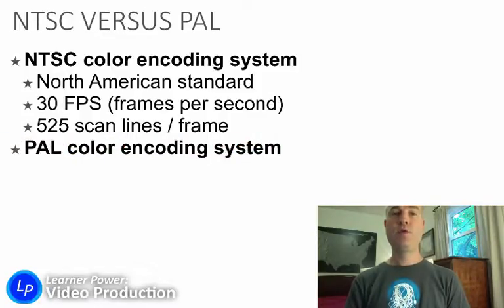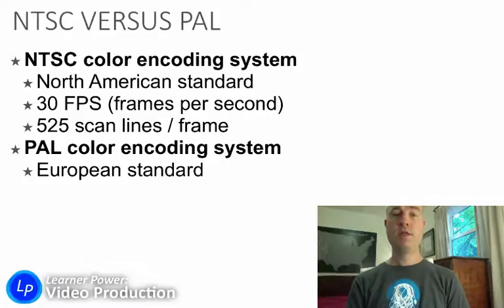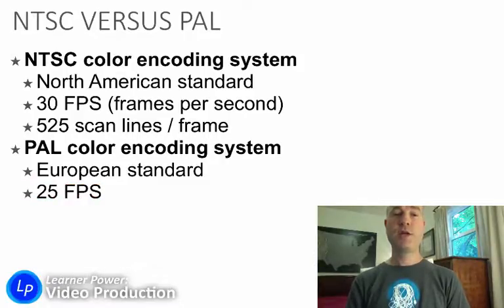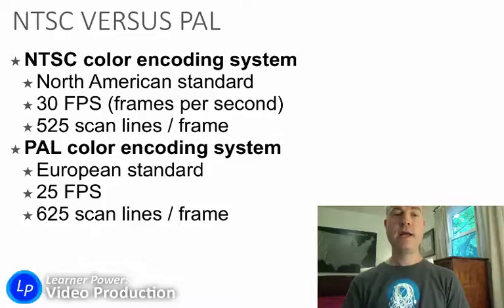Then we move over to PAL, which was used in Europe and some other parts of the world as well. The PAL color encoding system is the European standard. It happens to run at 25 frames per second, and it scans 625 lines for each frame, making it slightly higher quality.